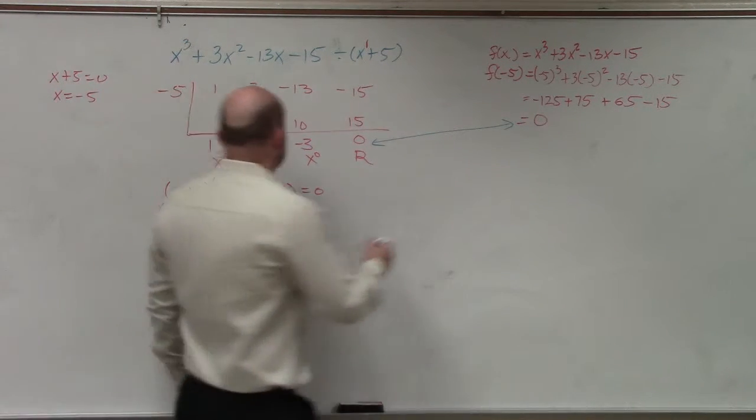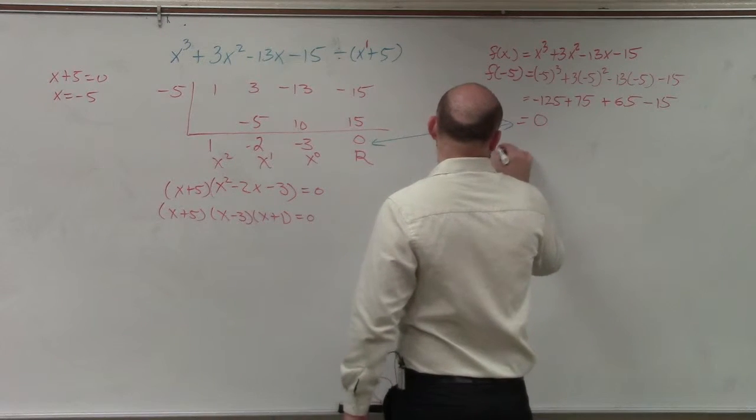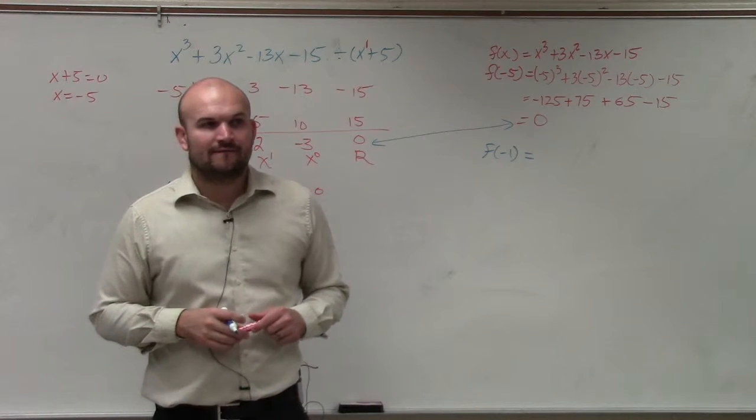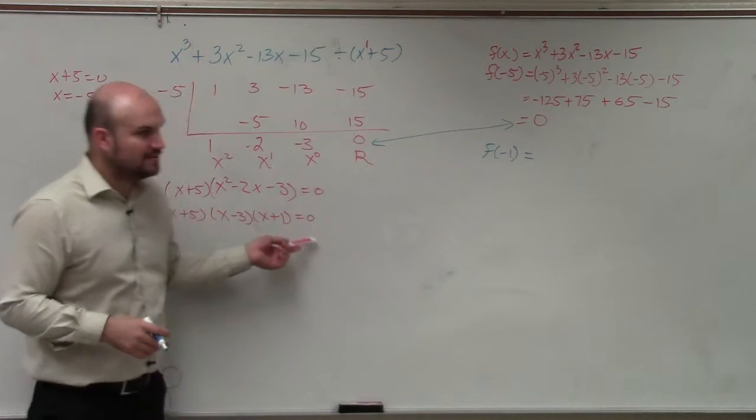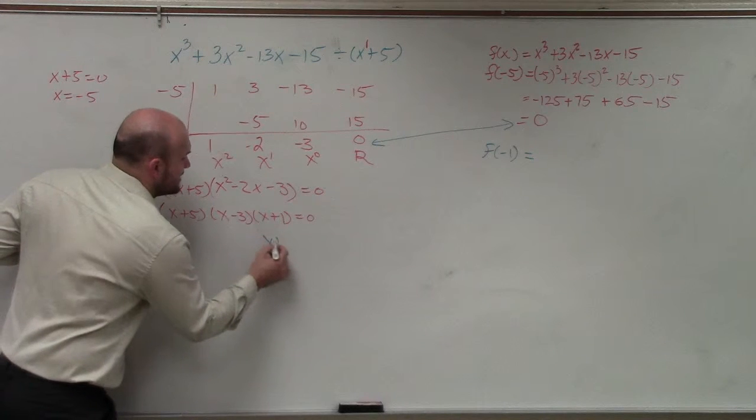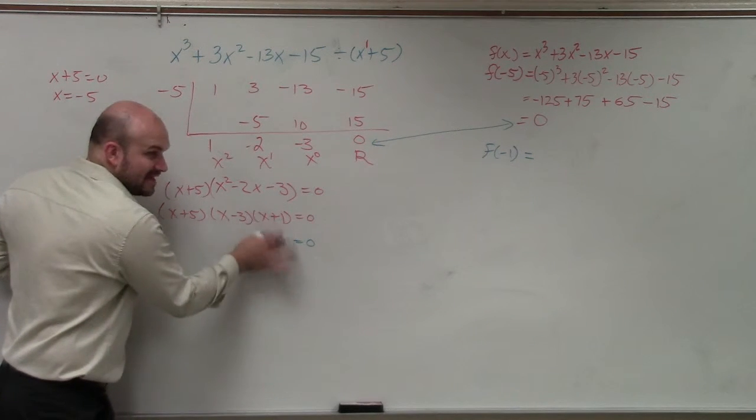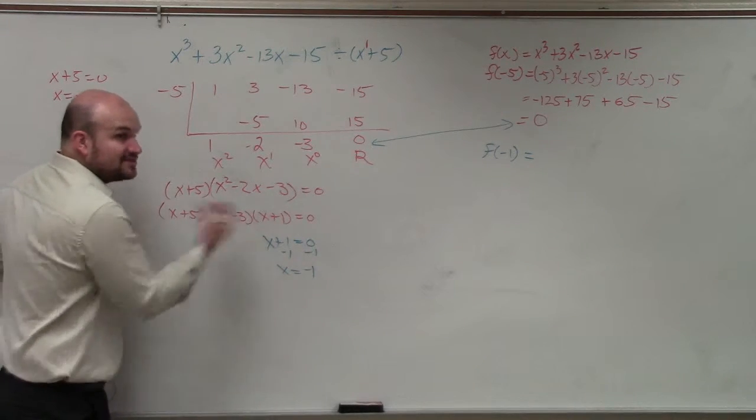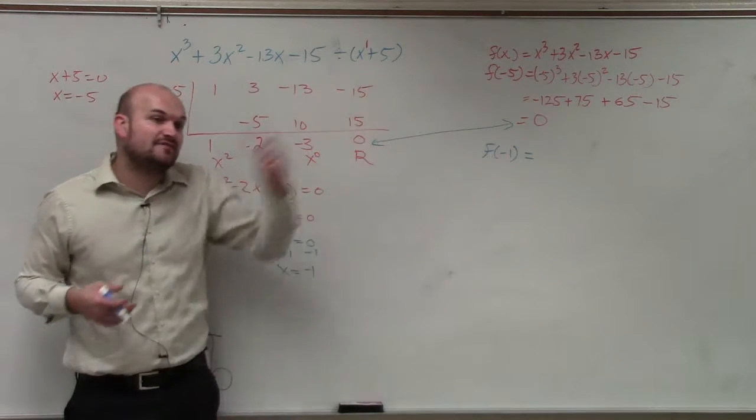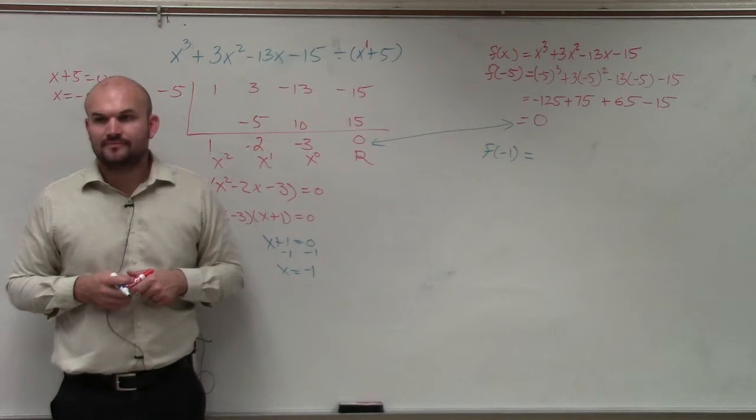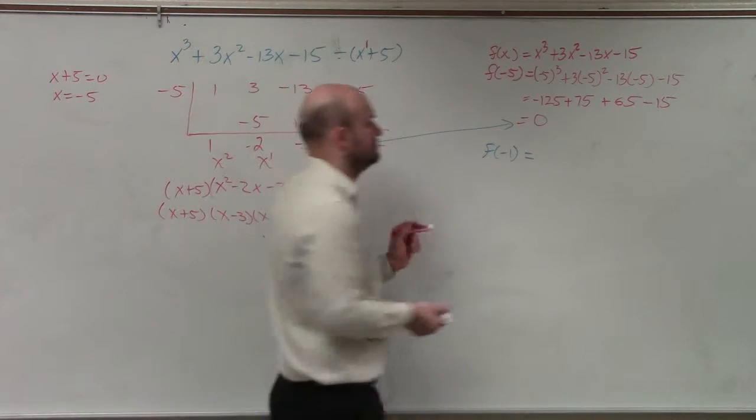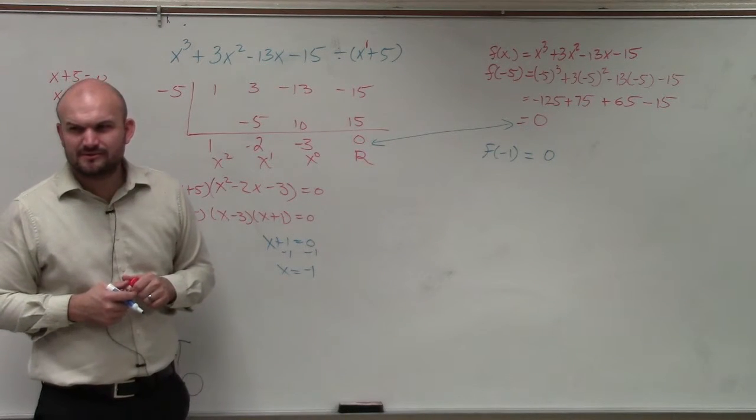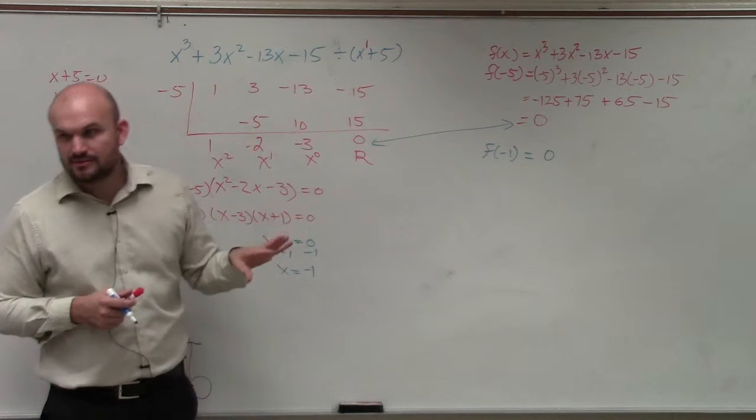So just for instance, what if I did f of negative 1? What do you guys think that remainder would be? Is negative 1 a zero? Yes, it is. x plus 1 equals 0, right? Set your factor equal to 0. x equals negative 1, right? x equals negative 1 is a zero. So if I did f of negative 1, what do you guys think that would give me? Give you 0, right? It works. Does that kind of make sense for everybody? Kind of, más o menos?